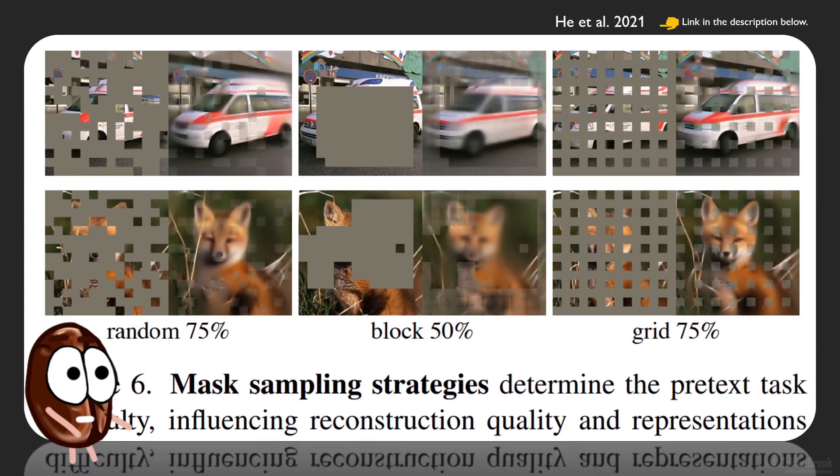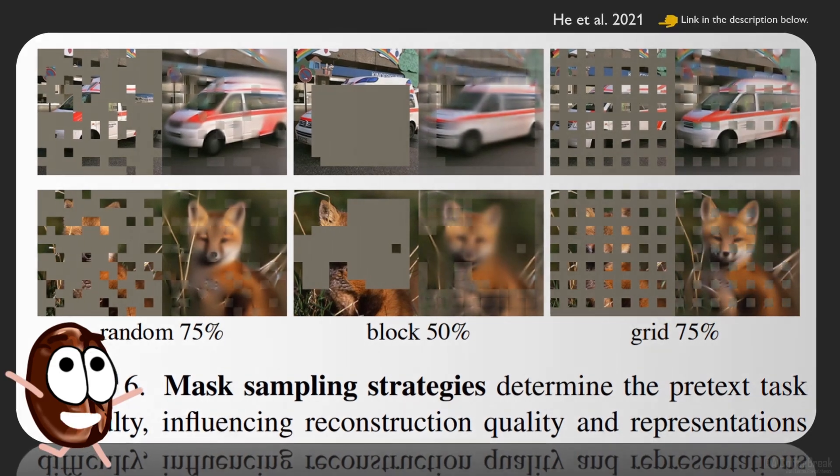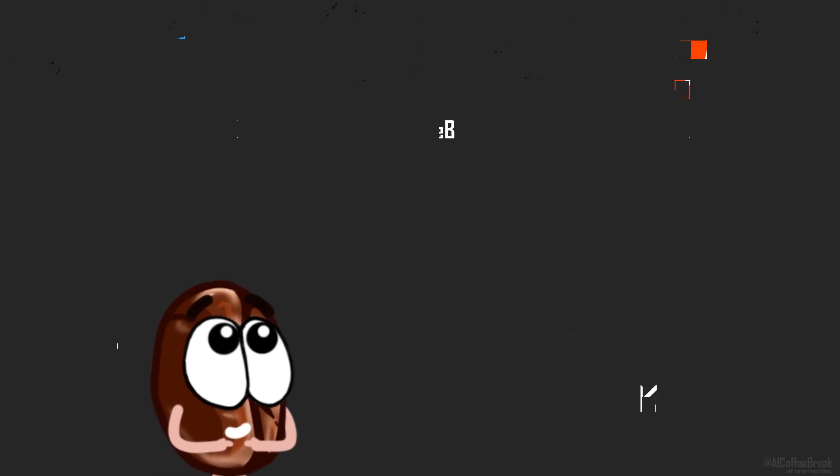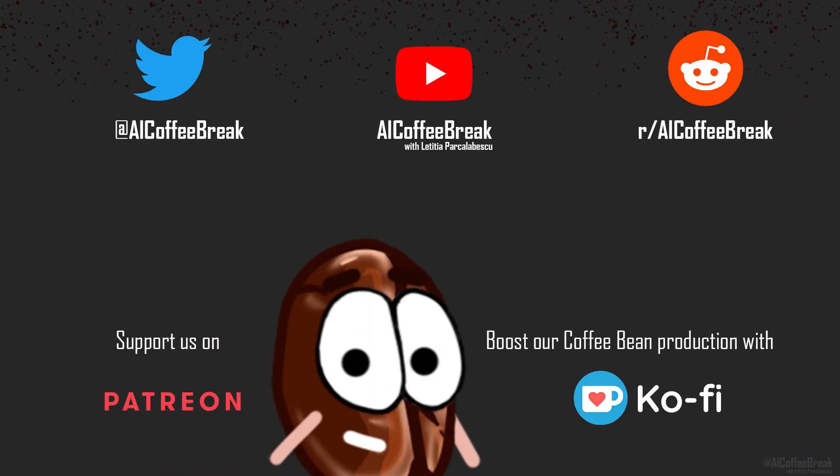Also, random masking is better than regular masking, which makes sense, because the model should have seen all possible combinations of masks and positional encodings or positions. And if you want to know even more about all this, read the paper and other similar papers. And while leaving, do not forget to like and subscribe. Okay, bye!